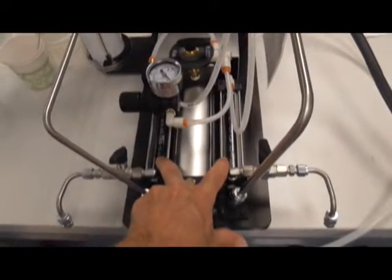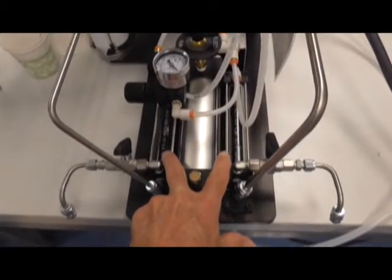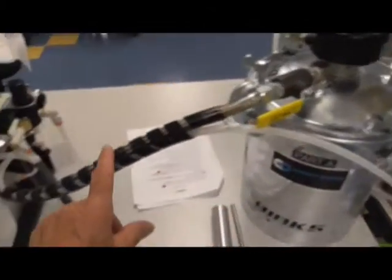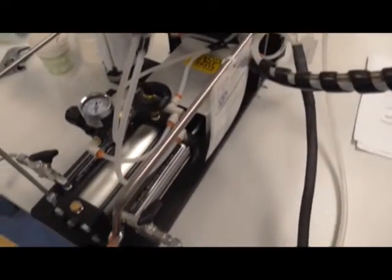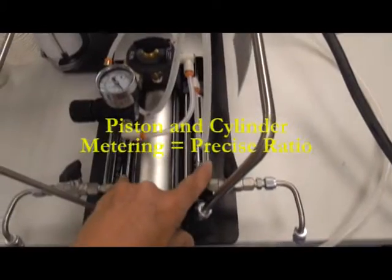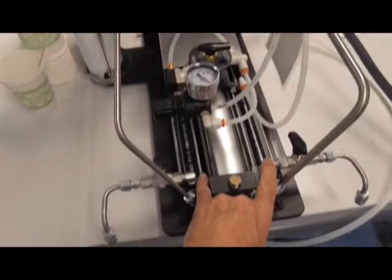These are the two metering cylinders that get the ratio, put the adhesive on the proper ratio. And the same thing is happening in this tank. Material flows in through the rotary valve and fills this cylinder. So the ratio here is determined by the diameter of the two cylinders.